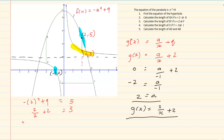Now, how do I get the length of GH? Top minus bottom. So 5 minus 3 which is equal to 2 units.